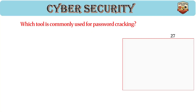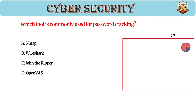Which tool is commonly used for password cracking? Answer: C, John the Ripper. John the Ripper cracks weak passwords, supports dictionary and brute force attacks, and is commonly used by penetration testers.